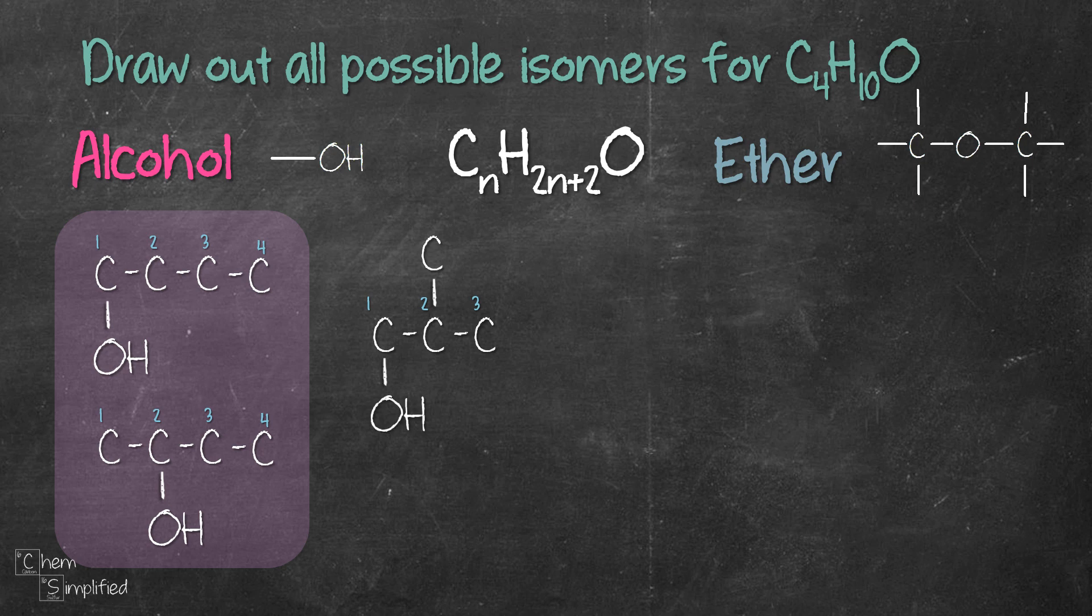Keeping the same 3-carbon chain, let's move the OH to the second carbon like that. That gave us another isomer. Now if we were to move the OH to the third carbon, it will be the same as placing OH on the first carbon. That means we are now done with the 3-carbon chain alcohol.